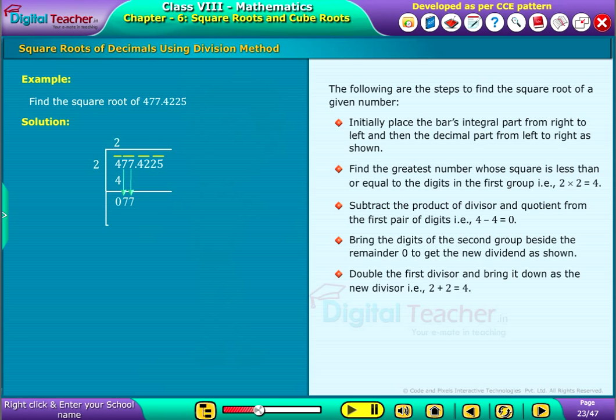Double the first divisor and bring it down as the new divisor. That is, 2 plus 2 is equal to 4.